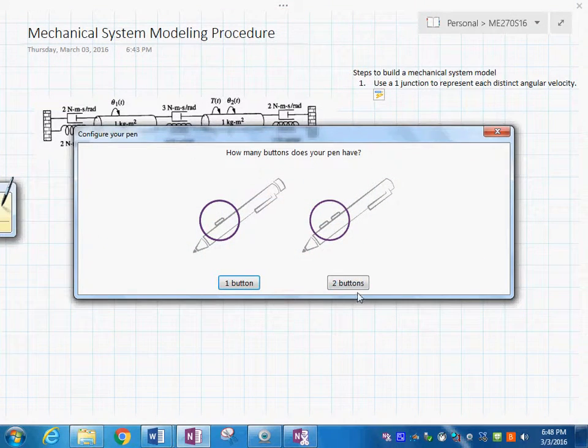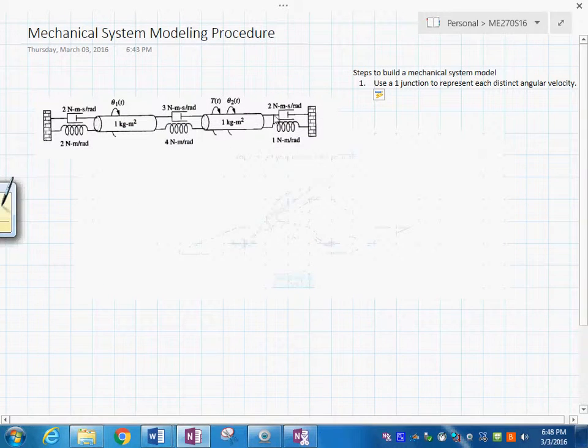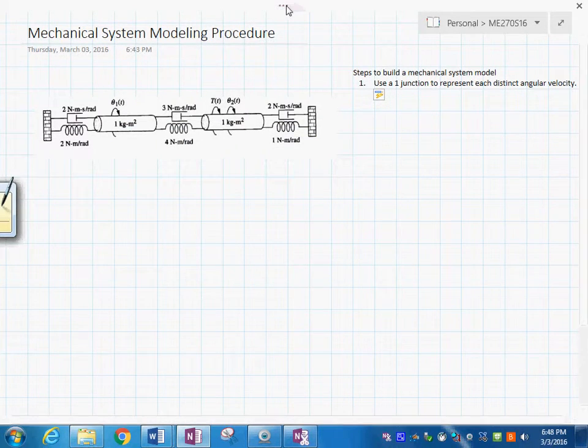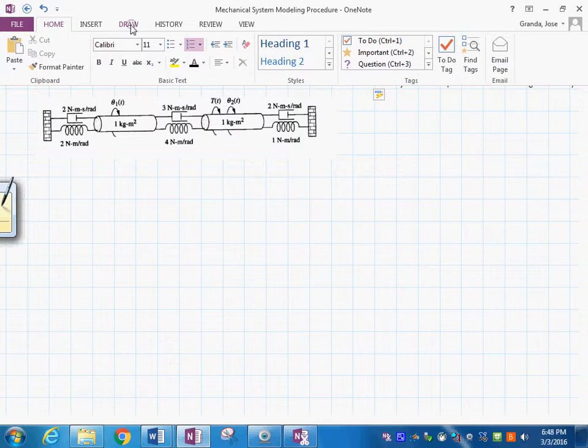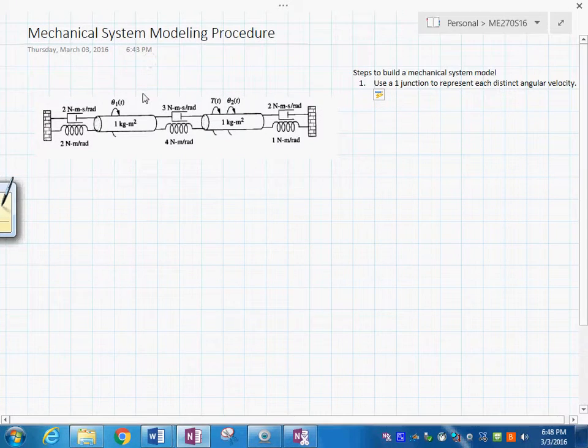You see this is one angular velocity, this is another angular velocity here. So what I'm going to do is use a one junction and I'm going to draw it right on the graph right here. You see, and put the one junction. So this is omega 1 or theta 1 dot. This would be omega 2, which is theta 2 dot like that.